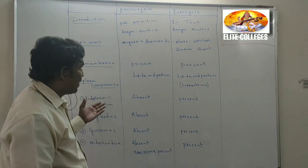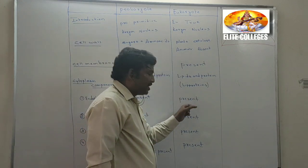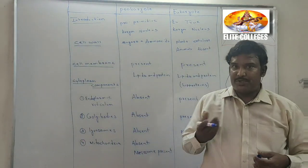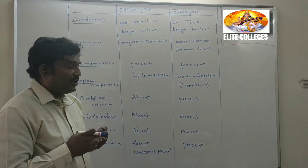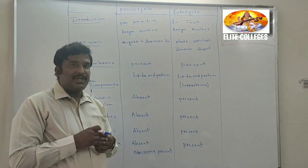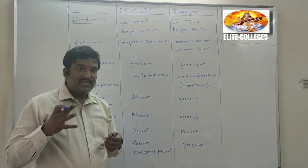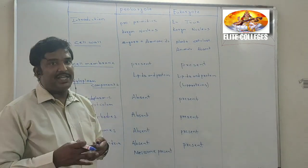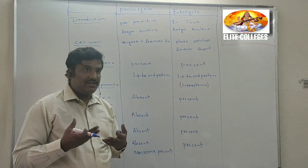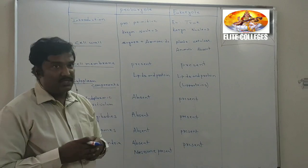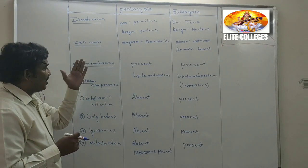Endoplasmic reticulum is absent in prokaryotes but present in eukaryotes. The main function of the endoplasmic reticulum in eukaryotes is the synthesis of lipids and proteins. Synthesis of lipids and proteins in eukaryotes is done with the help of the endoplasmic reticulum, but it is absent in prokaryotes.